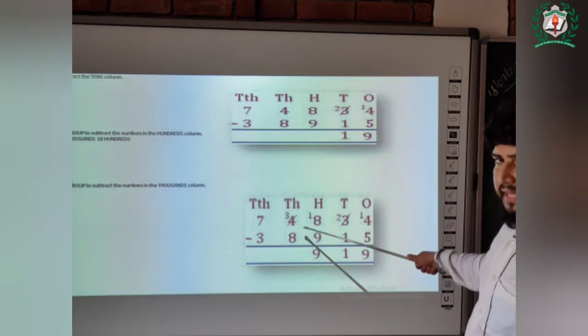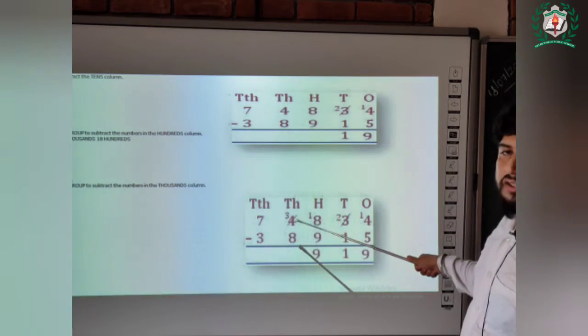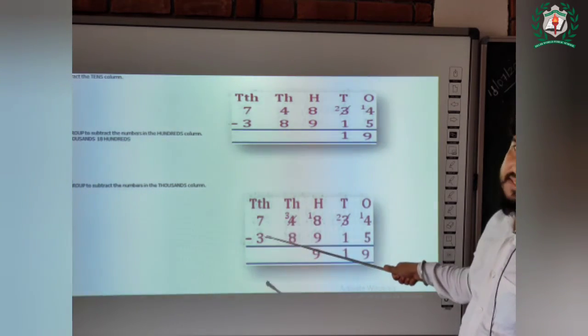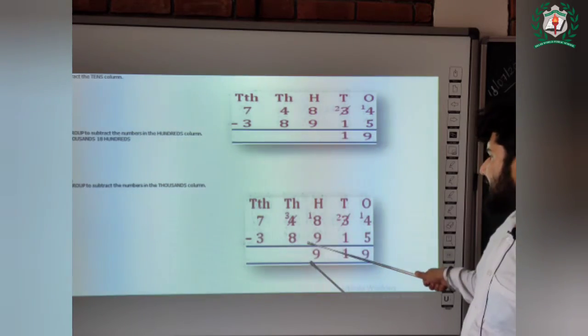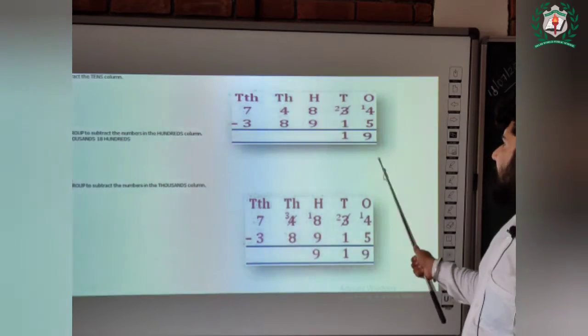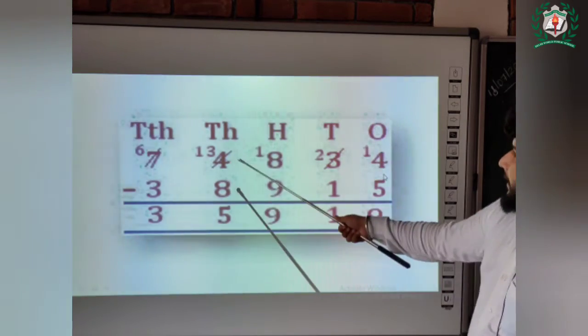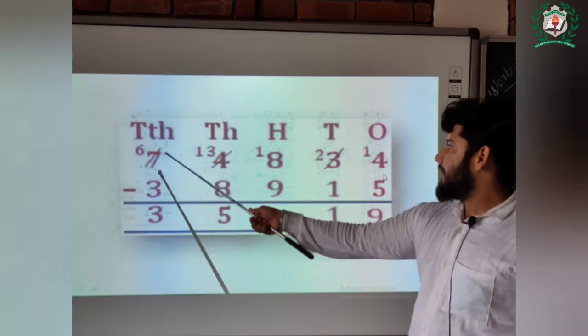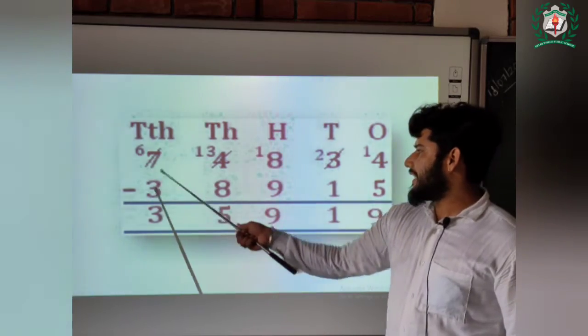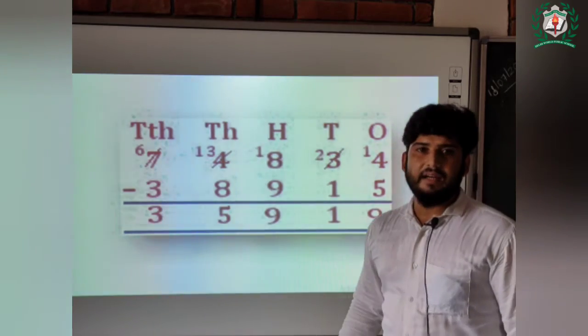Here is three. Now we have to take a carry because three minus eight can't be done. Thirteen minus eight — we will see in the next slide. Thirteen minus eight is five. Here, six minus three is three.